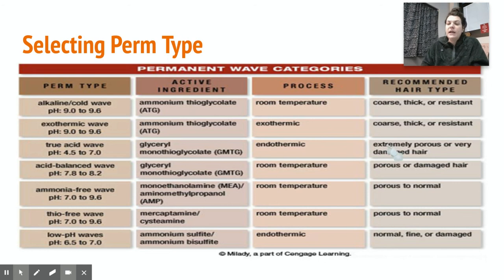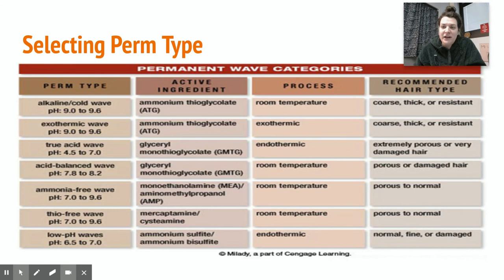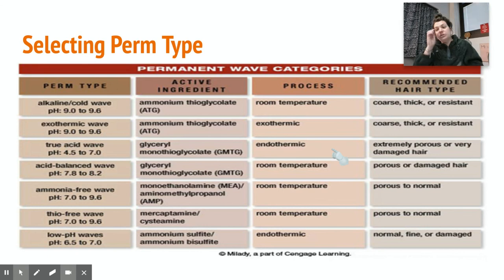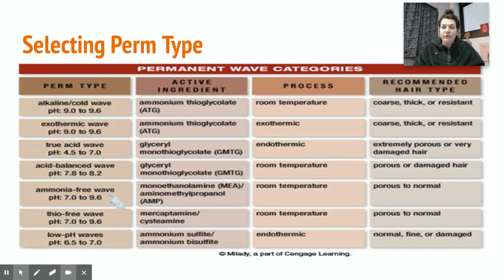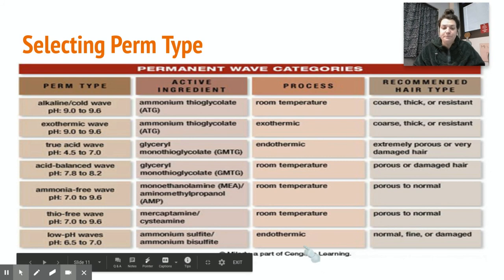For porous or damaged hair, use an acid-balanced wave; for porous to normal hair, use an ammonium-free wave. Low pH waves also require you to input energy — heat. Porous or damaged and acid-balanced wave, porous to normal and ammonium-free wave, and so on based on your client's hair condition.